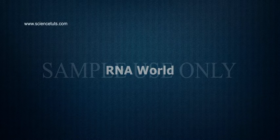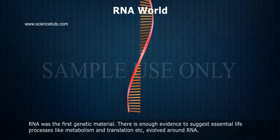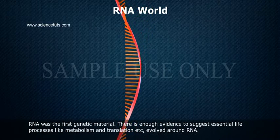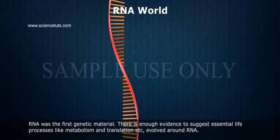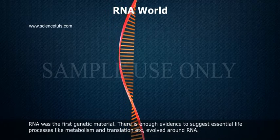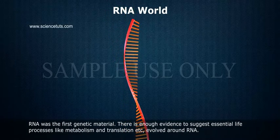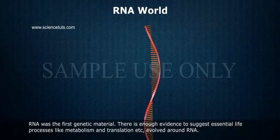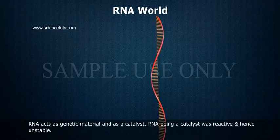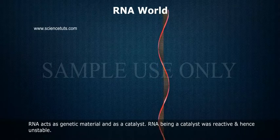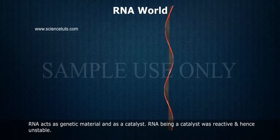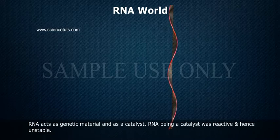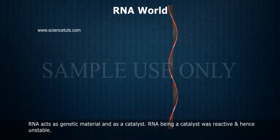RNA world was the first genetic material. There is enough evidence to suggest essential life processes like metabolism and translation evolved around RNA. RNA acts as genetic material and as a catalyst. RNA being a catalyst was reactive and hence unstable.